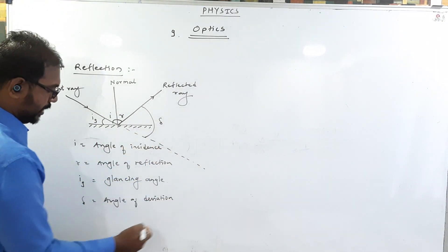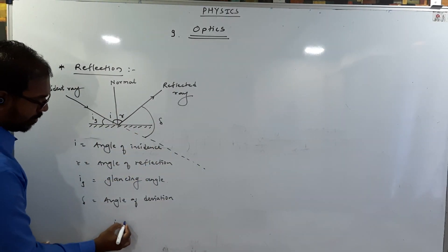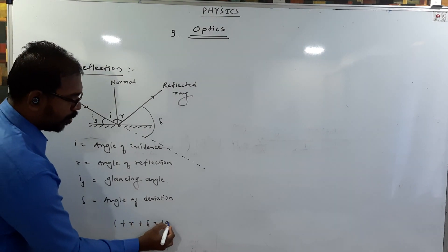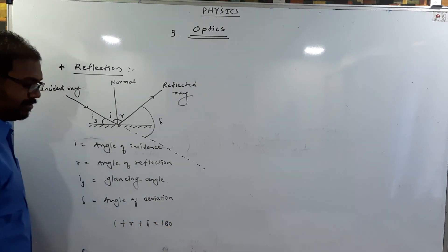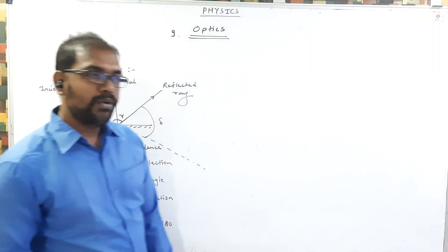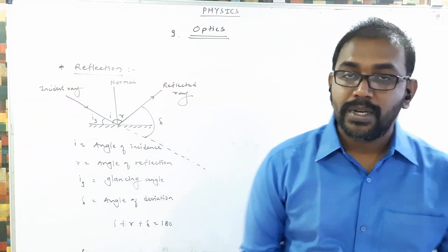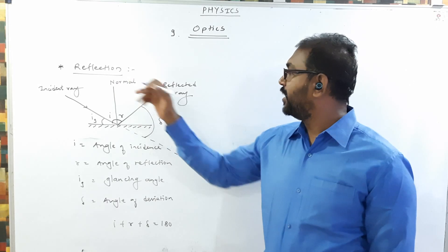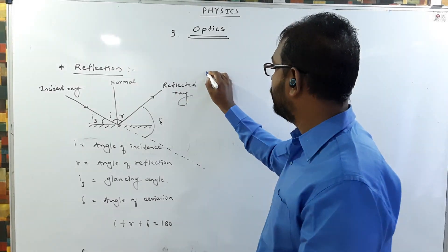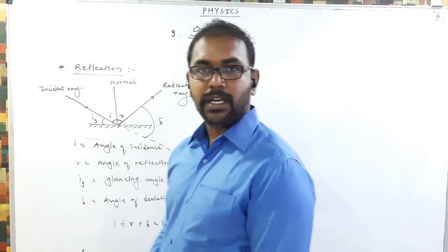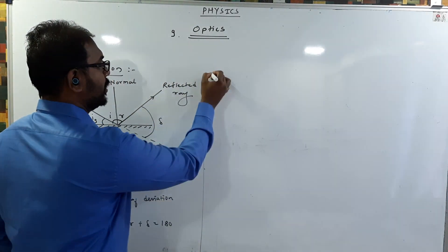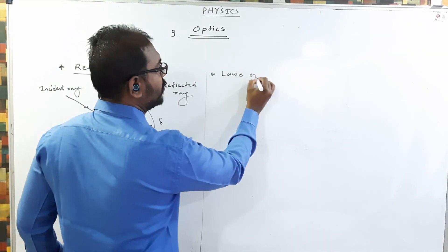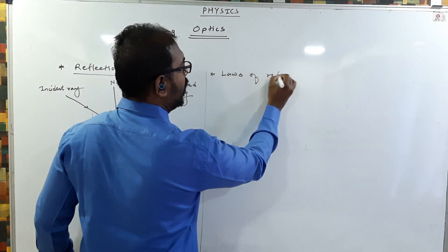So delta is the angle of deviation. Now, how do we get the angle of deviation formula? You know that this is a straight line, so i plus r plus delta equals 180 degrees. Now we have to cover the laws of reflection, and then we'll come back to this deviation formula.